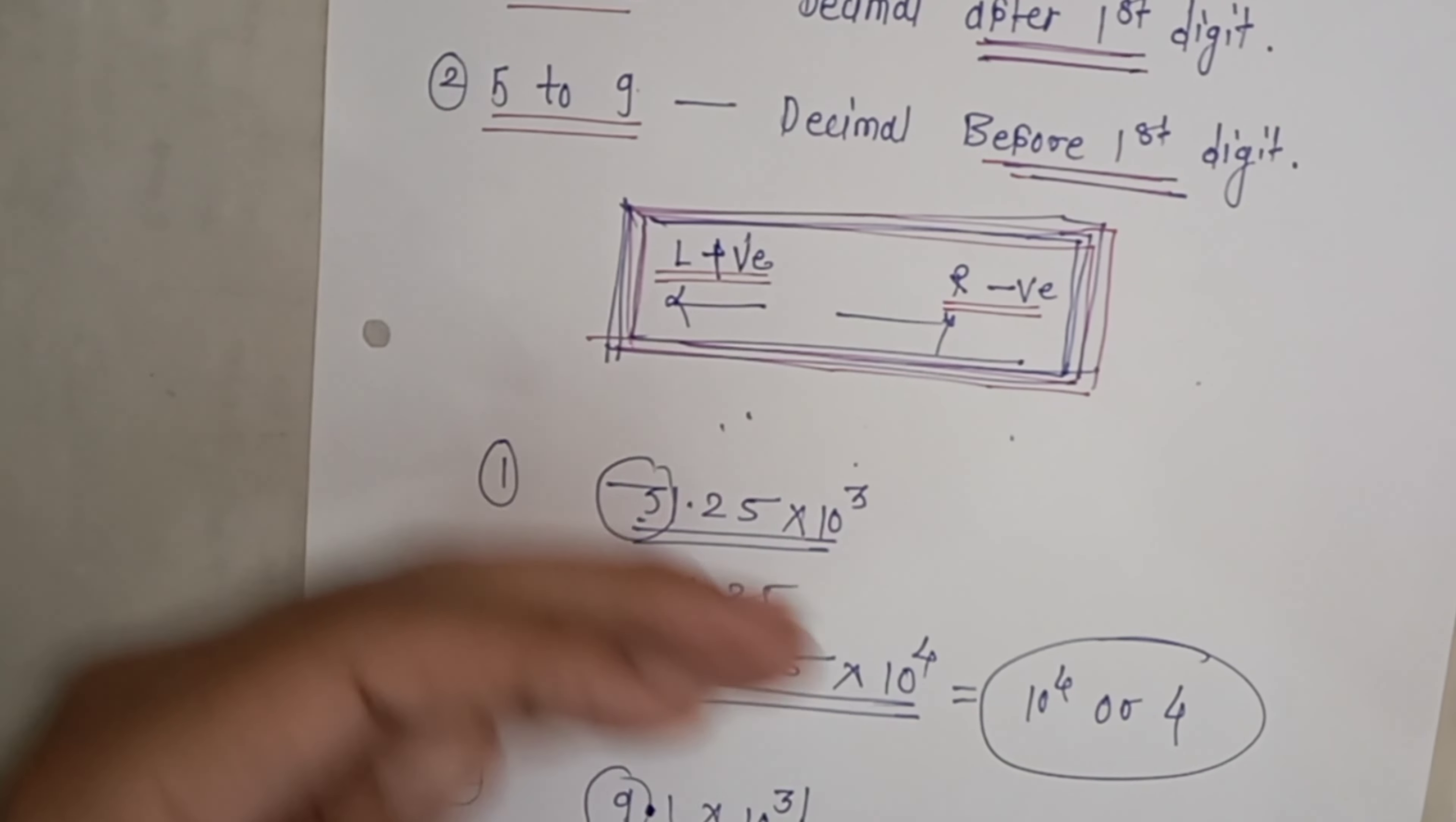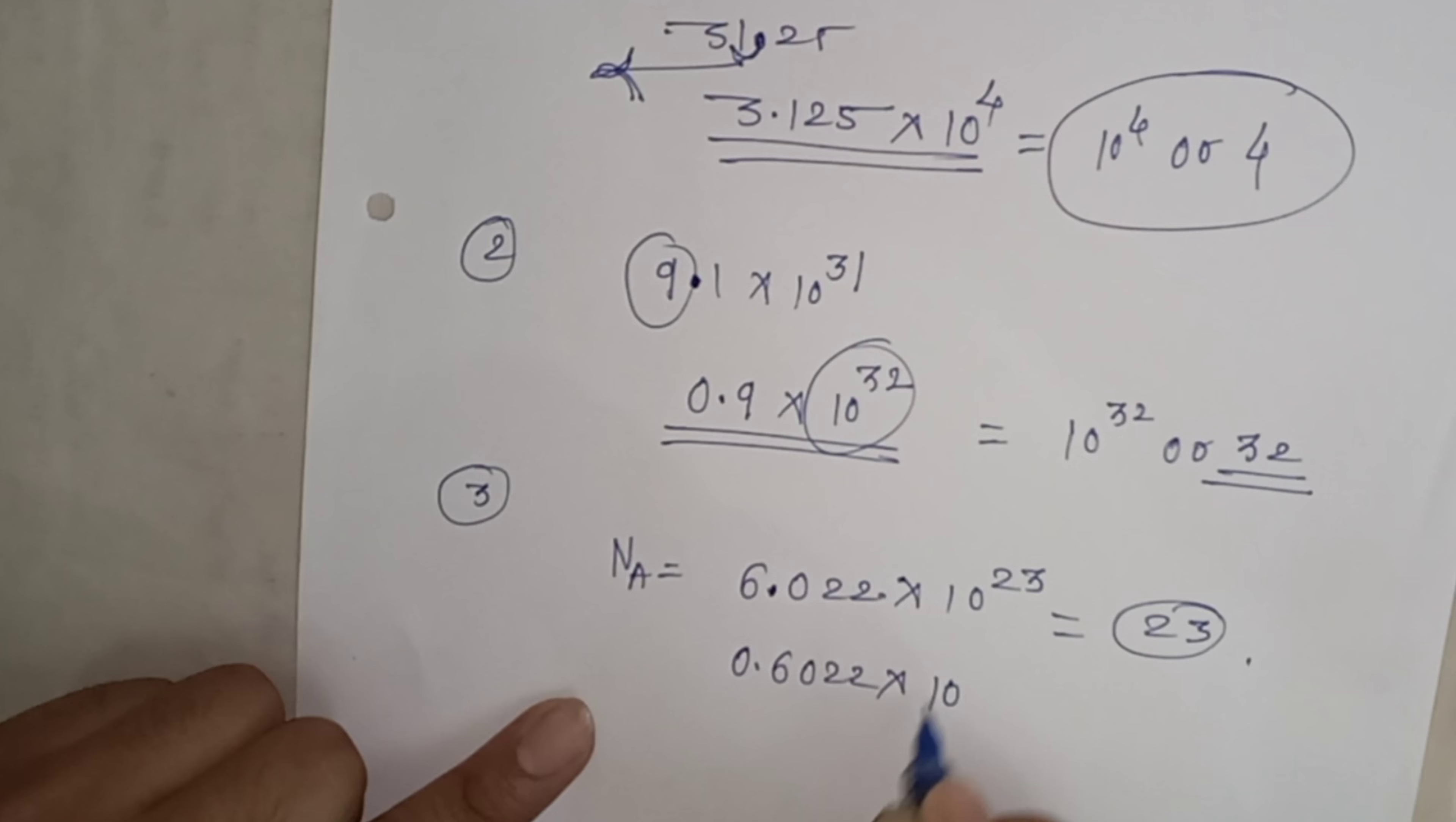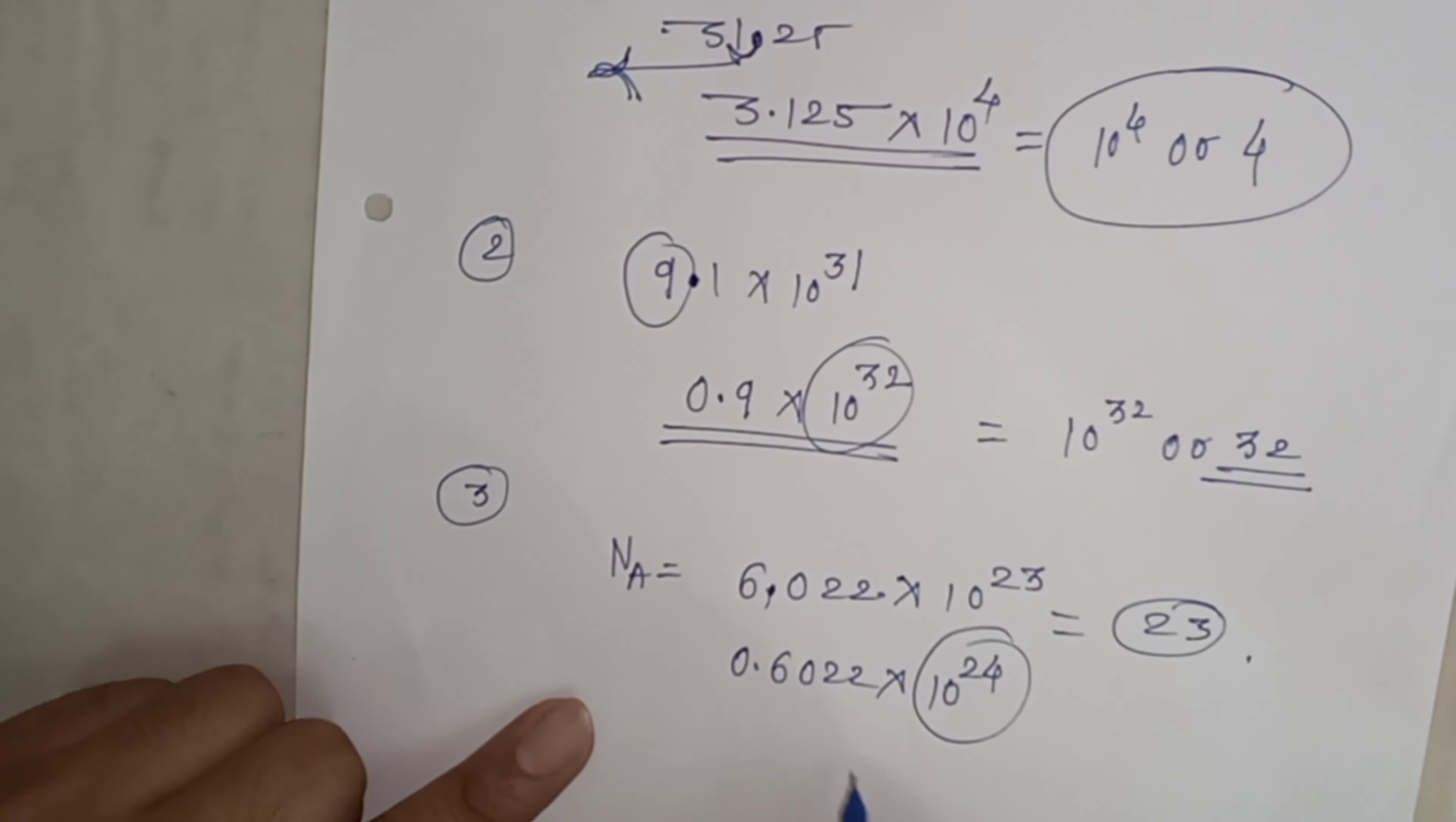As per the second condition, give the decimal before the first digit. So it becomes 0.60222 × 10 to the power - when we move decimal left, we add plus. So your order of magnitude will not be 23, it will be 24.